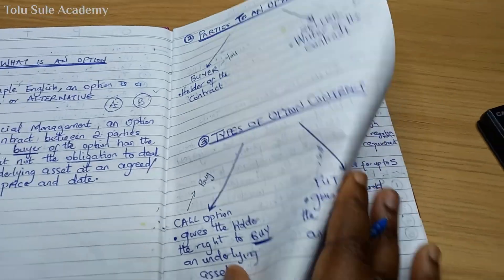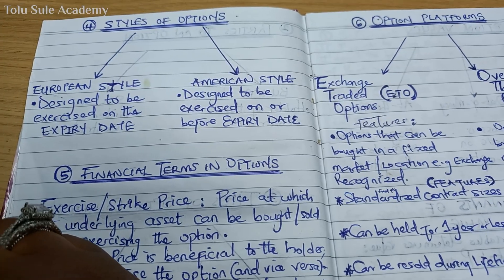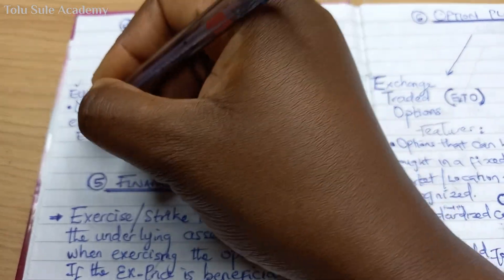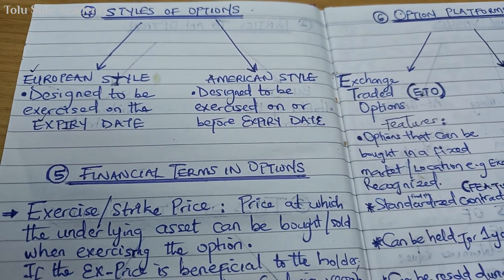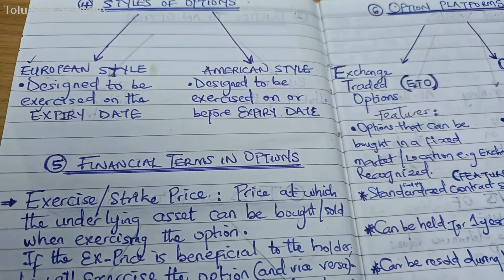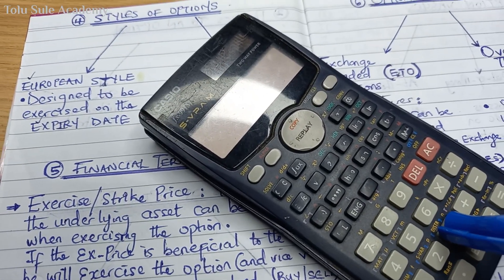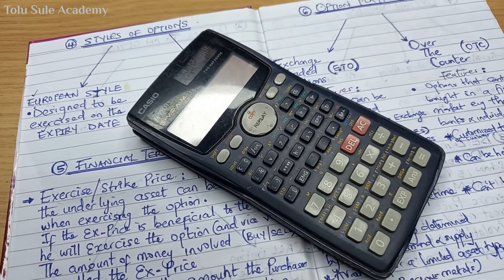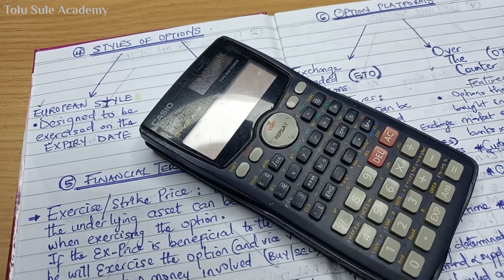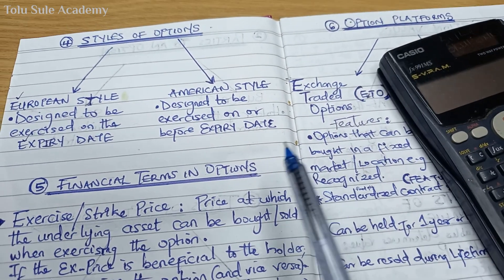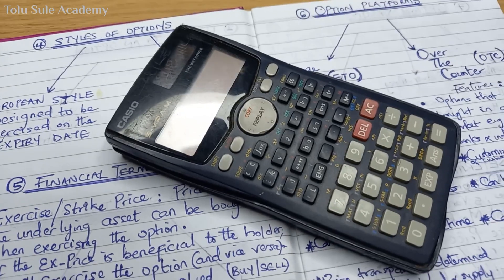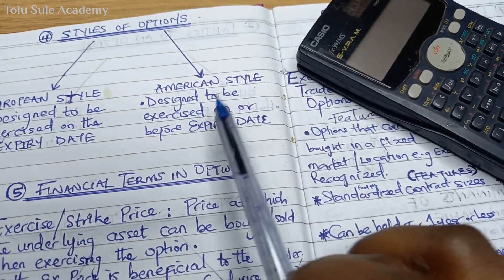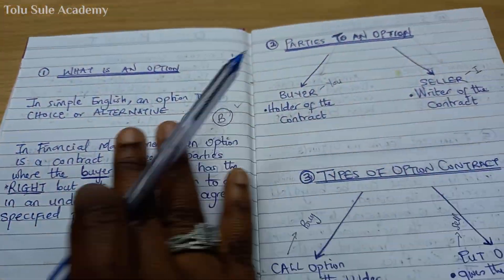Styles of options: we have the European style and the American style. The European style is designed to be exercised only on the expiry date — a useful memory trick is 'E for expiry on E for European.' The American style is designed to be exercised on or before the expiry date, so you don't have to wait until the agreed date.